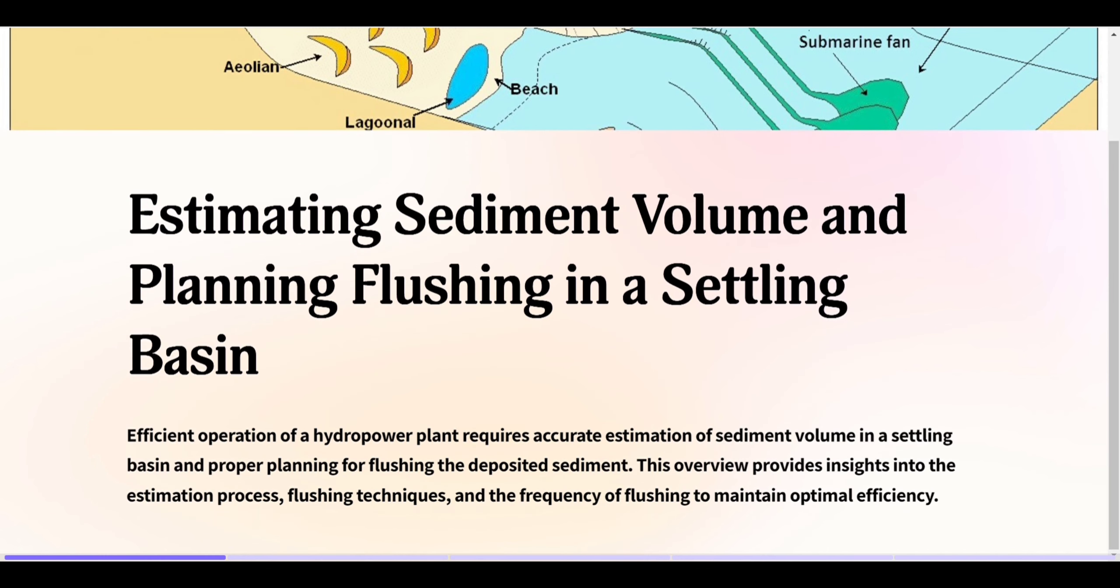Efficient operation of a hydropower plant requires accurate estimation of sediment volume in a settling basin and proper planning for flushing the deposited sediment. This overview provides insights into the estimation process, flushing techniques, and the frequency of flushing to maintain optimal efficiency.